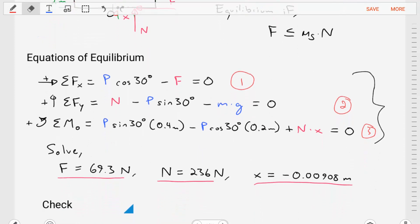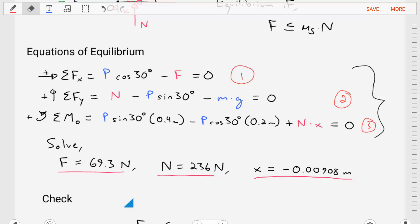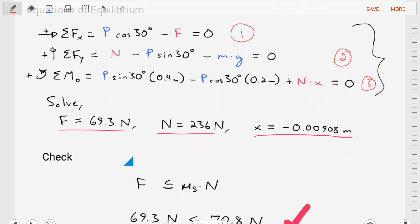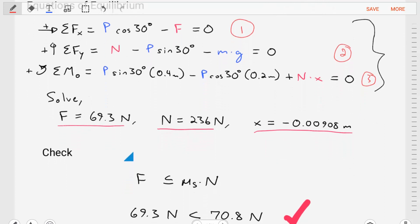With these three equations, we can see that there only are three unknowns. So we can solve these equations. We can solve equation one and find that F is equal to 69.3 newtons. We can solve equation two and find that N is equal to 236 newtons. And we can solve equation three and find that x is equal to negative 0.00908 meters. So that means that we assumed that x was to the right, but it's actually a little bit to the left of the weight in the crate. So we've done this step. We've found the forces that are needed, that we need to maintain equilibrium.